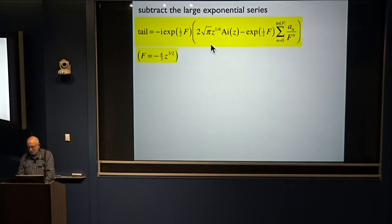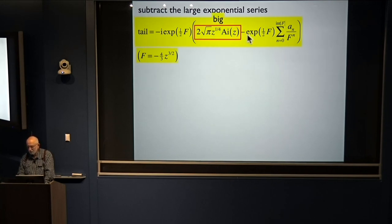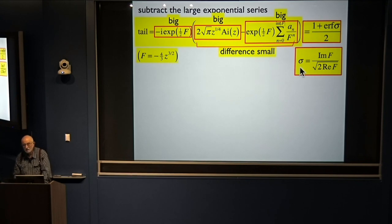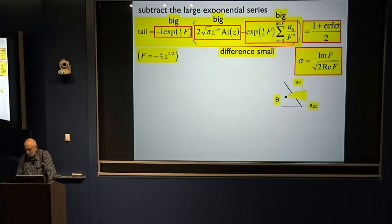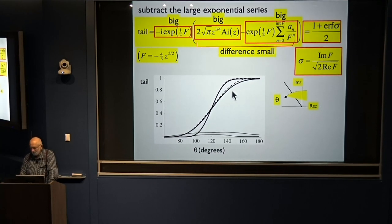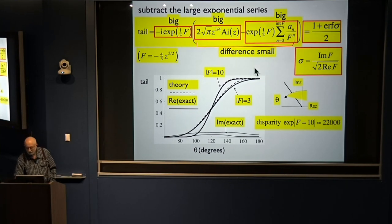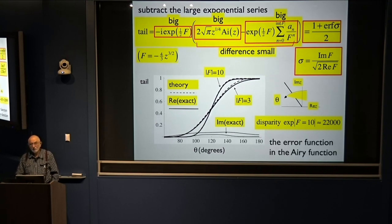Here's the Airy function: subtract off the leading exponential down to its smallest term — the best you can do. Then it turns out you get something small, and it's universal — it's an error function. What is sigma? It's this universal scaling variable: the imaginary part you're crossing from negative to positive, divided by square root of twice the real part. For the Airy function, here are two cases: f equals three, f equals ten. You've got the exact and the approximate theory — it works well and better the higher you go. The disparity is 22,000 for the large case, and hidden away is this thing of order one — the smooth error function.